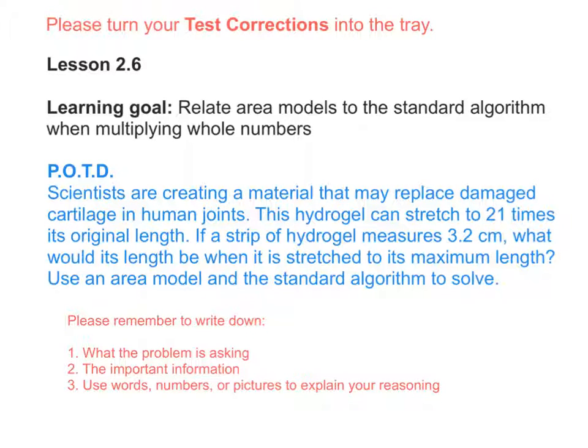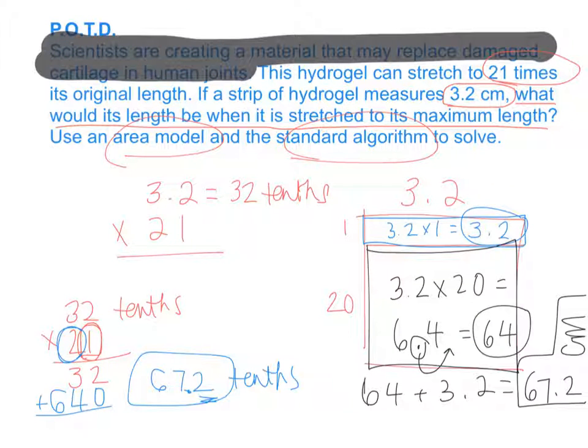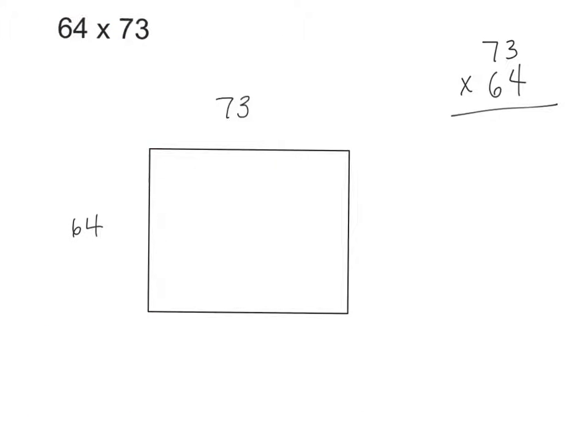Today we're talking about lesson 2.6. We're going to take what we learned about area models yesterday and how they relate to the standard algorithm and continue exploring that idea. Today's learning goal is to be able to relate area models to the standard algorithm when multiplying whole numbers. We're going to continue thinking about area models. Go ahead and write down this problem in your notebook: 64 times 73.